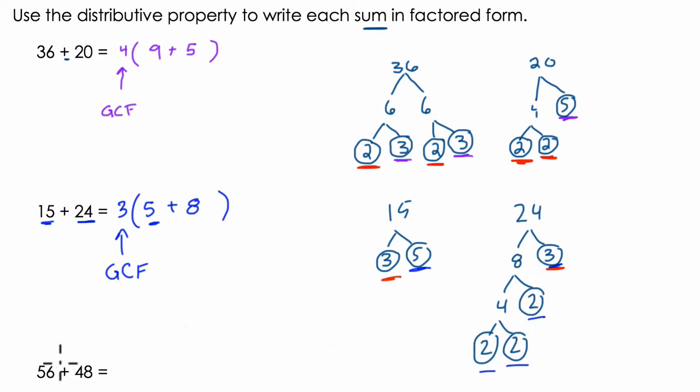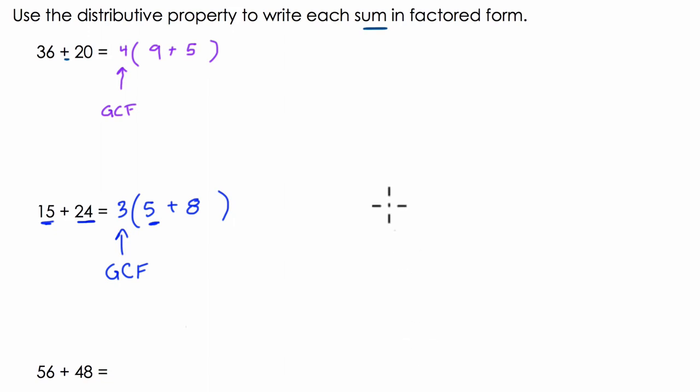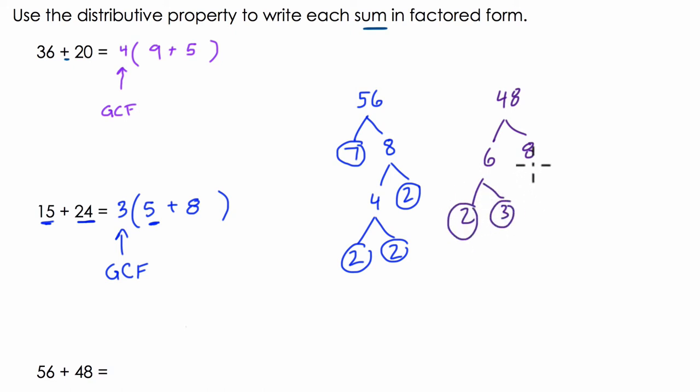Finally, we have 56 and 48, so I'm going to clear off some of this. So 56, 56 is the product of 7 times 8, so if we multiply 7 times 8, we get 56. 8 is 4 times 2, and 4 is 2 times 2. So 7 times 2 times 2 times 2 is 56. For 48, well, I know that 8 times 6 is 48. 6 is 2 times 3, and 2 and 3 are both prime. 8, again, is 2 times 4, and 4 is 2 times 2.